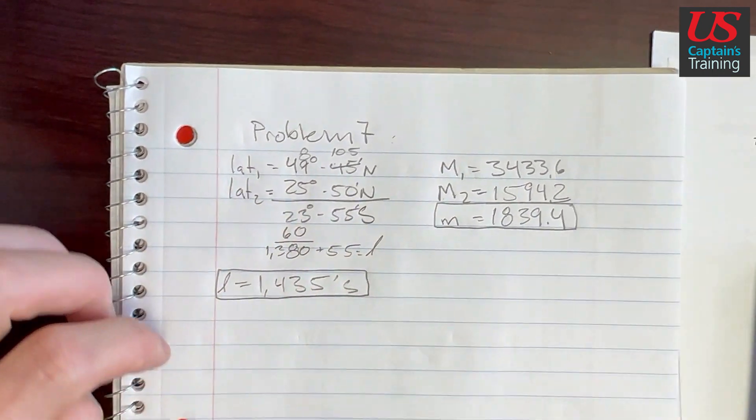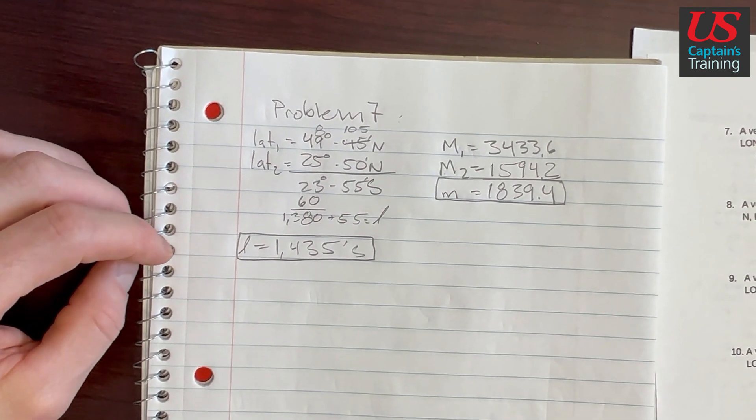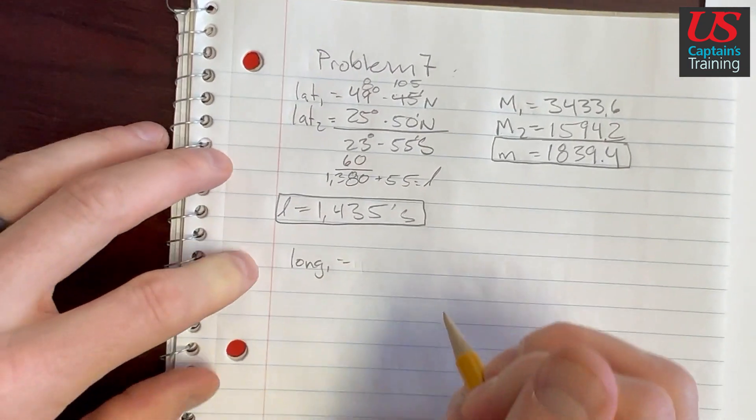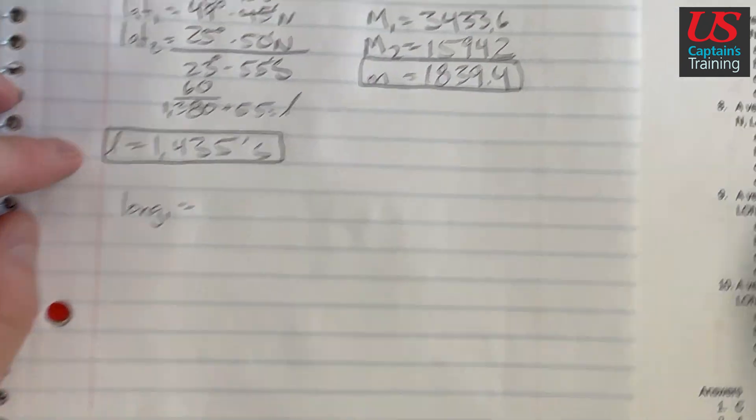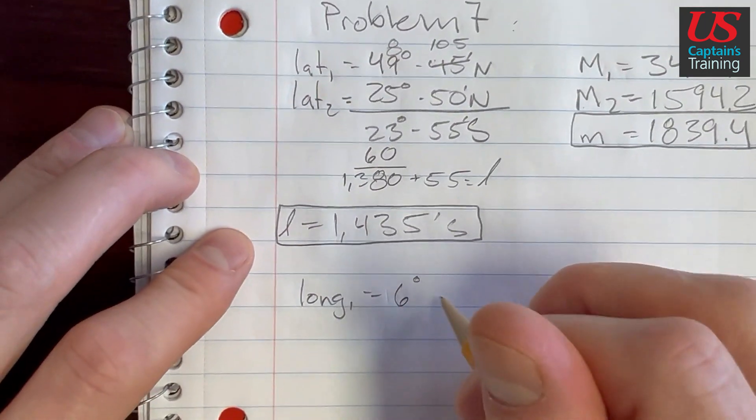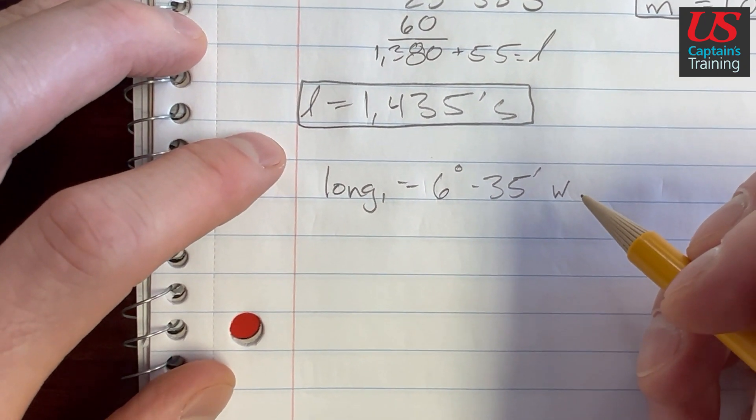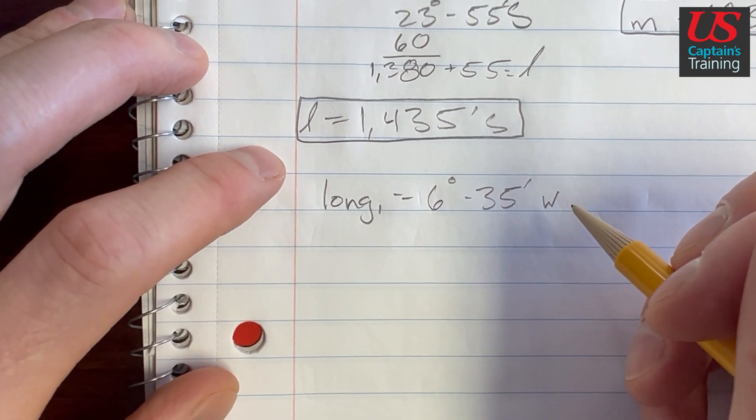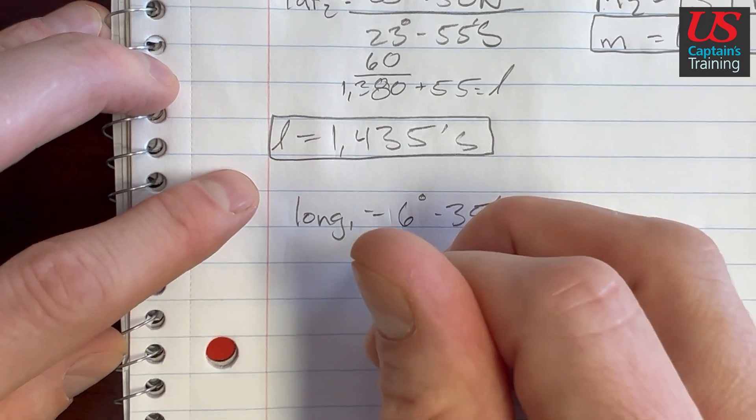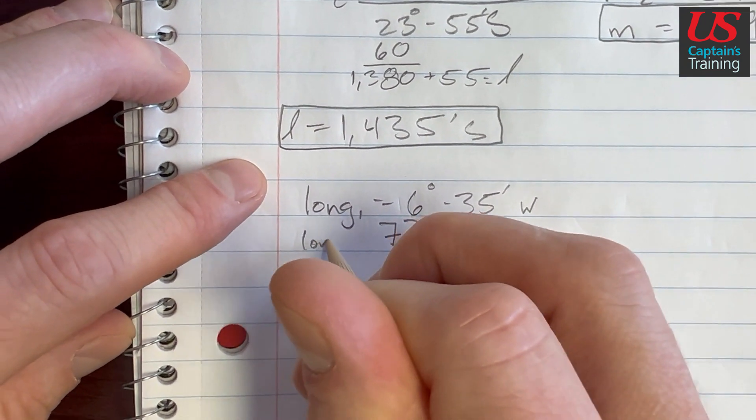And now we find D low by longitude, by finding the difference between longitude 1 and longitude 2. So let's find longitude 1 is equal to 6 degrees 35 minutes west. And then longitude 2 is 77 degrees 0 minutes west. And that's longitude 2.